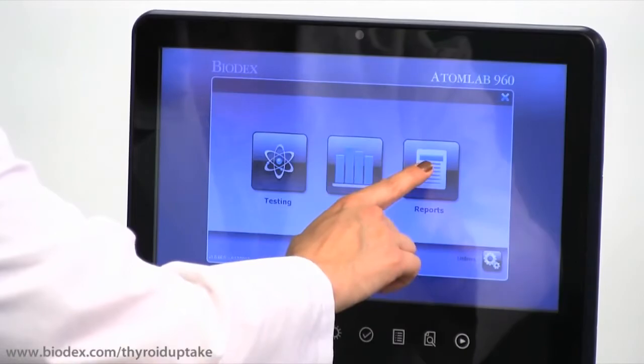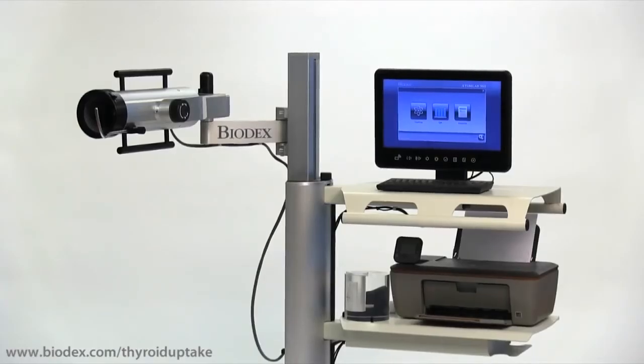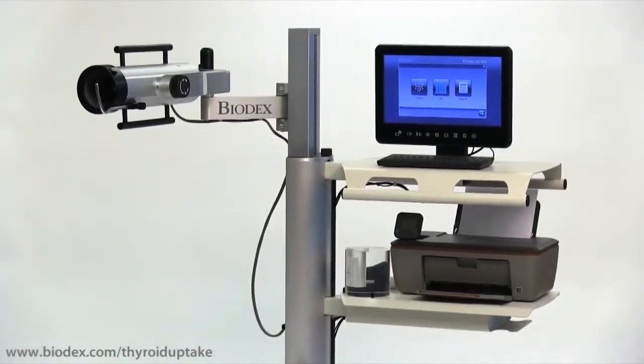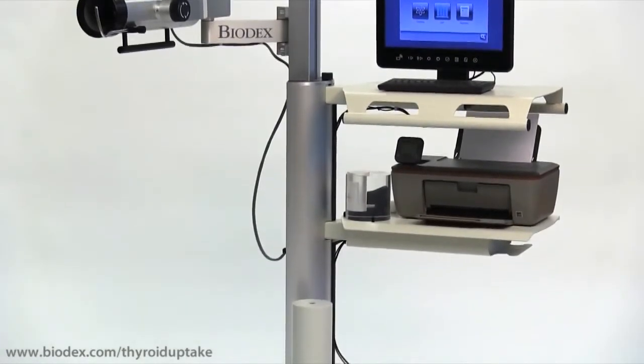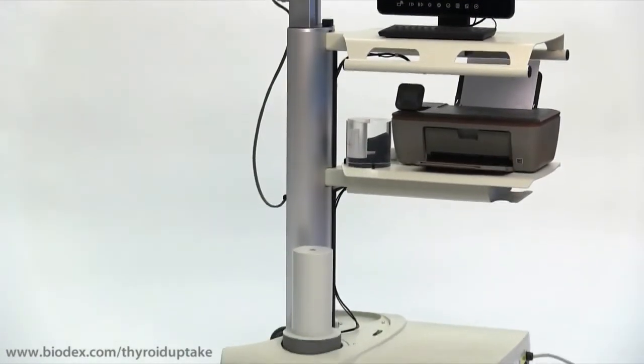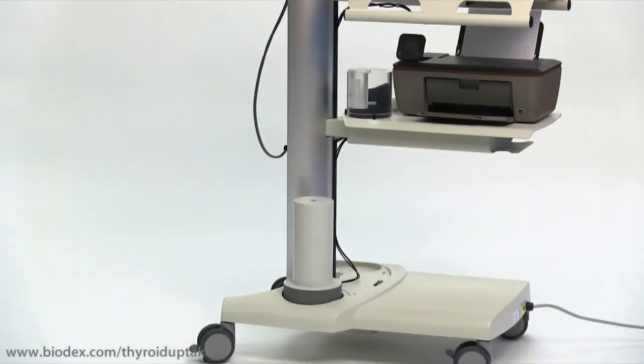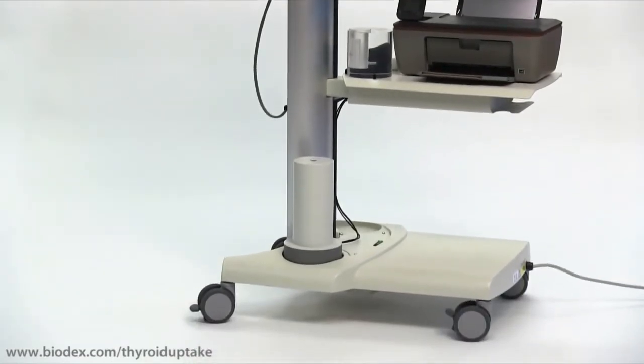The self-contained AtomLab 960 system is configured on a compact mobile platform with locking casters and a base that measures only 26 inches wide by 34 inches long.